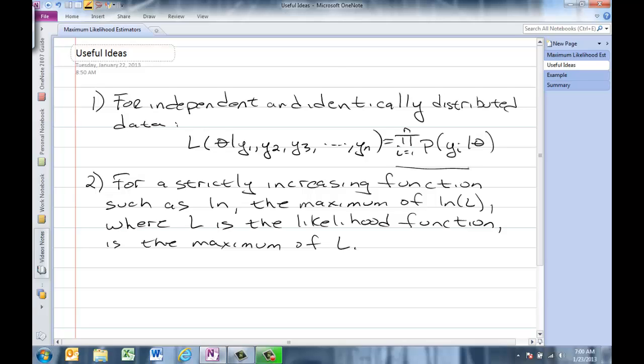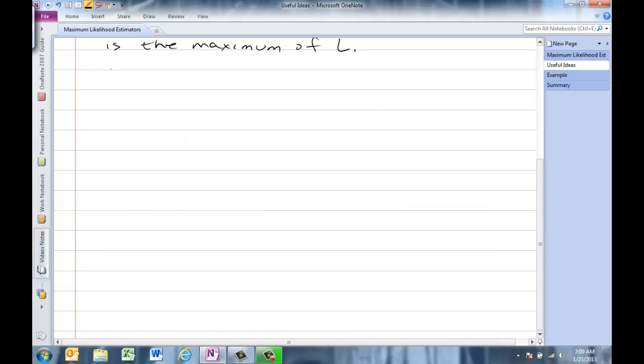The reason that's important is back up here, we're doing a product. If we took the derivative of the product, we're just going to involve the product rule, which becomes very cumbersome. Using the natural log, we'll be able to take the derivative of sums, which is preferable.